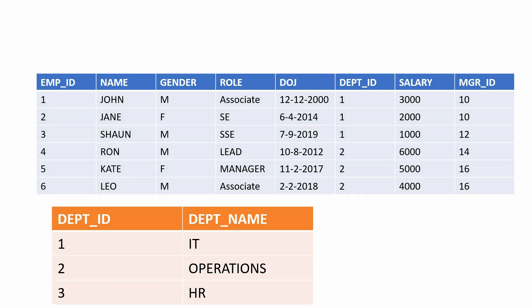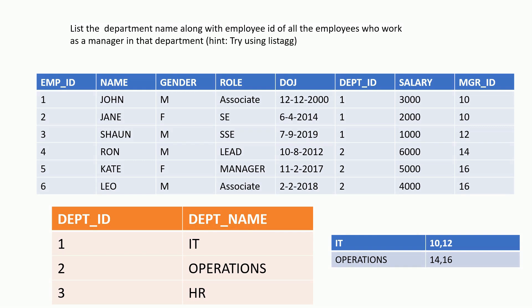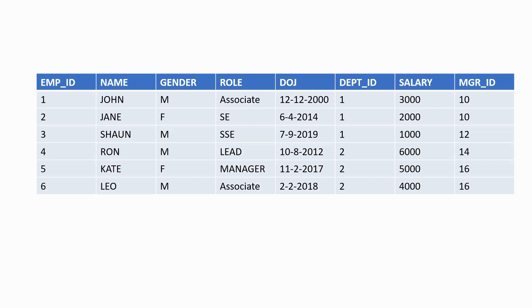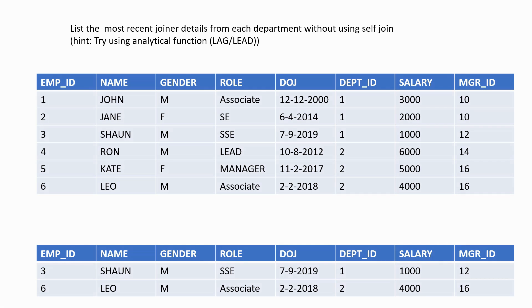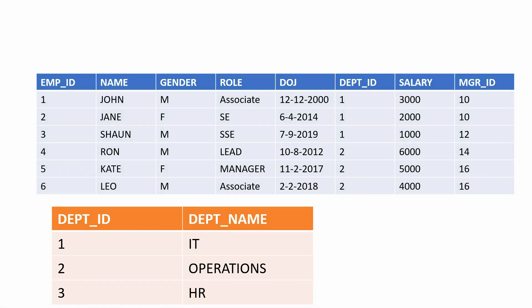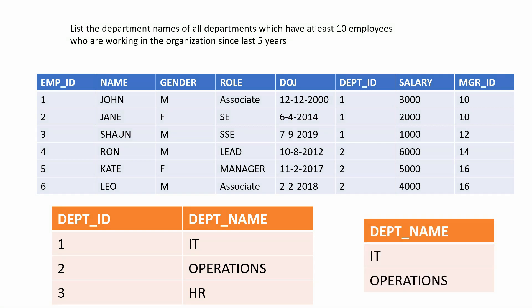In the thirteenth question, we need to display the department name along with the employee ID of all the managers working in that department. In the fourteenth question, we need to display the details of the employees who are the newest employee of their respective departments, and we have to do this without using a self-join. In the final question, we need to list all the department names that have at least 10 employees who have been working in the organization for the last five years.